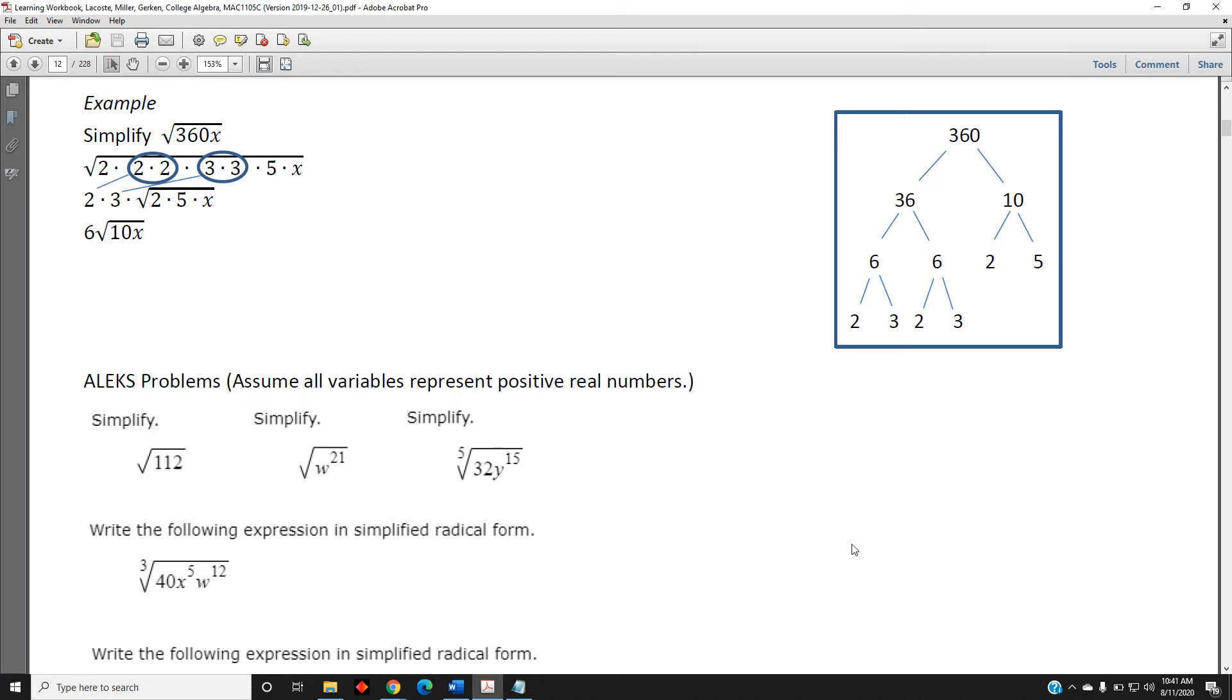Okay, the first step is to write the prime factorization of the radicand 360x. We know that's going to be composed of 360 times x, but the number 360 can be broken down into prime factors. One way to do this is to make a factor tree.